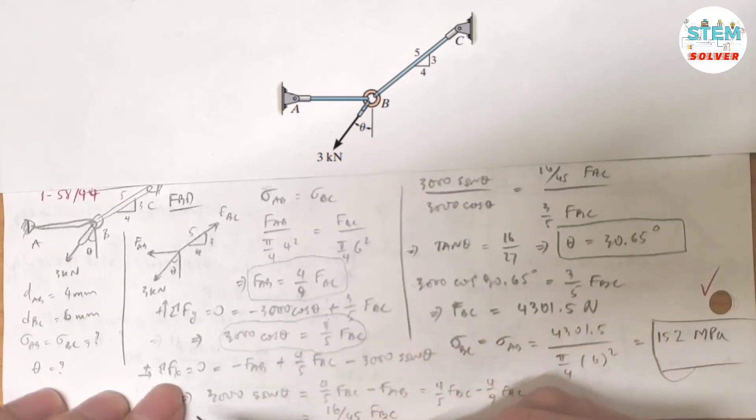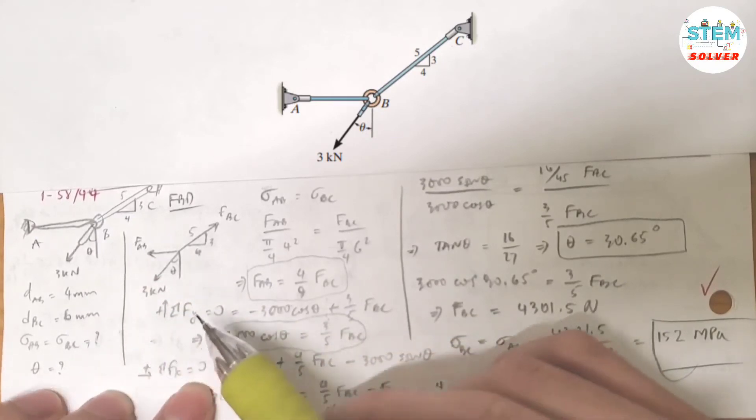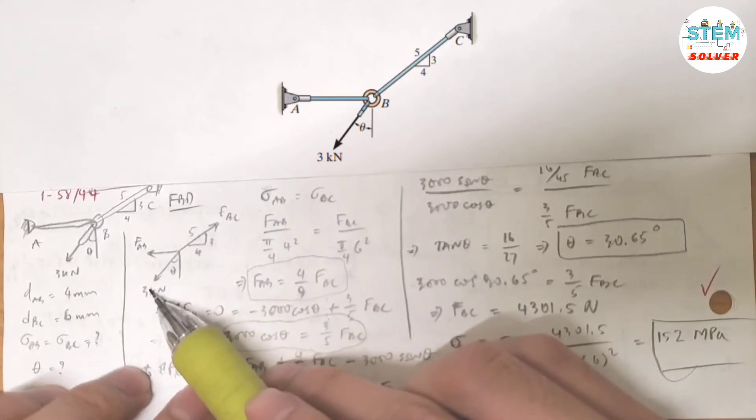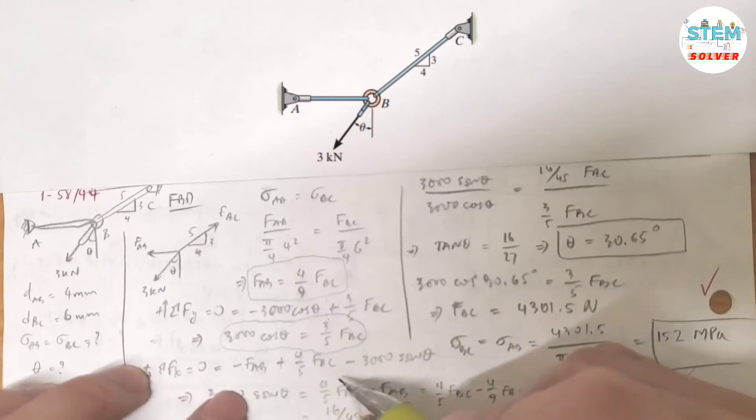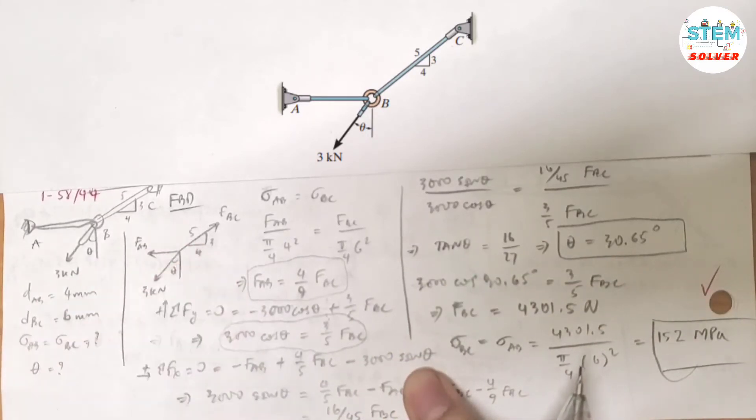Now take the summation about x-axis. I have negative FAB because it's pointing to the left, minus 3000 times sine theta to the left, and plus 4/5 FBC equals zero.